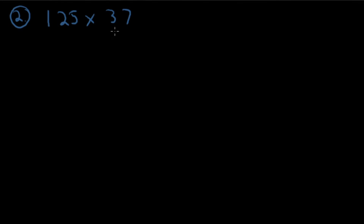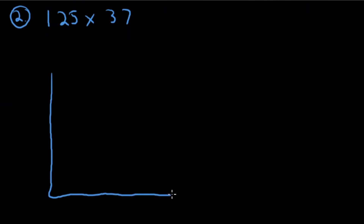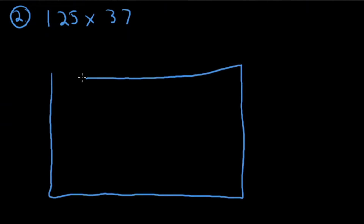Our second problem is 125 times 37. I'll also do both strategies here — starting with area model. I need a pretty big grouping to draw this one. Let's break into it and see how it goes.